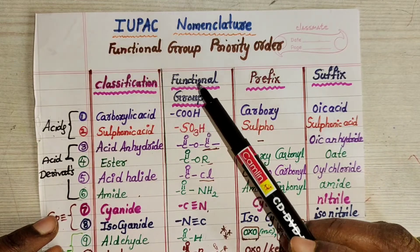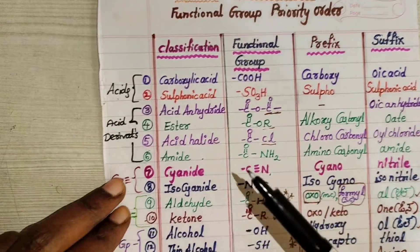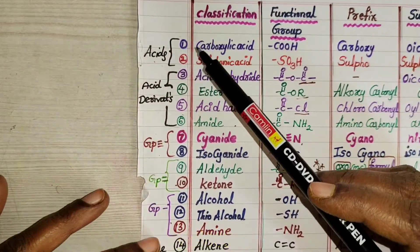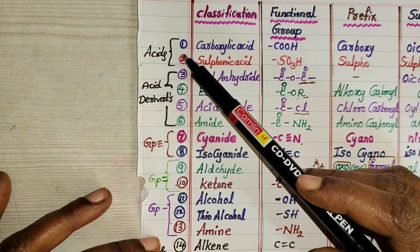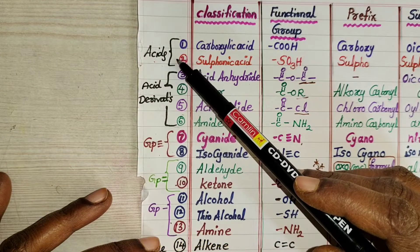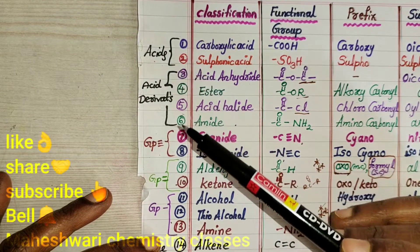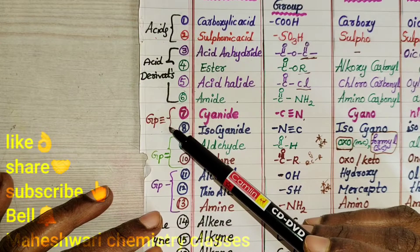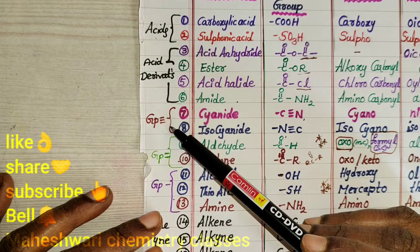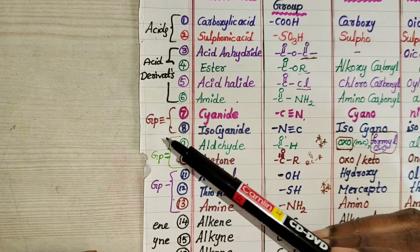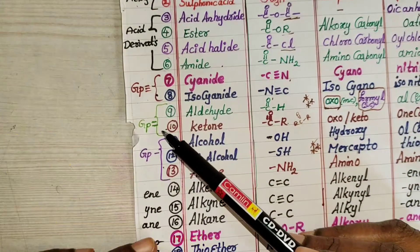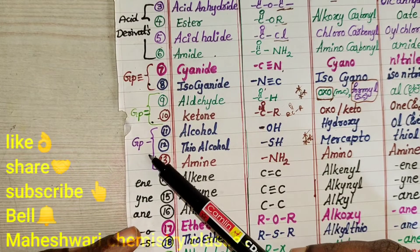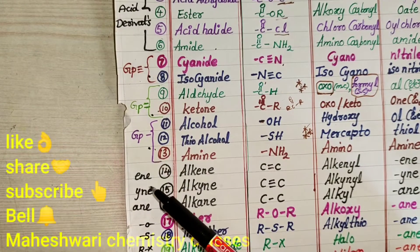This is the Functional Group Priority Order. We have to take these: pattern acids, acid derivatives, functional group with triple bond, functional group with double bond, and functional group with single bond.